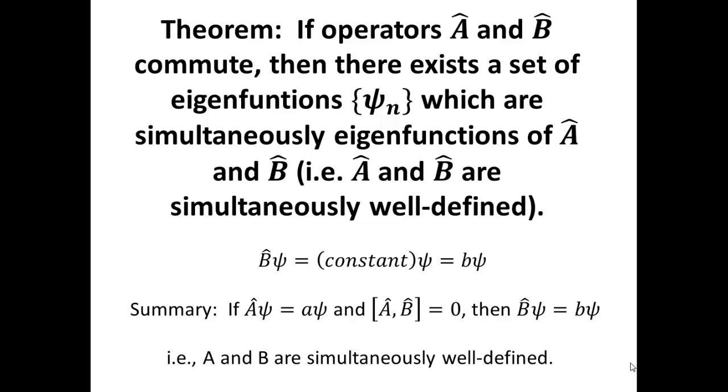And the reason why this is significant is that what this means is that both the properties A and B that we represented with the operators A and B are simultaneously well-defined, meaning we can know the values at the same time and we can know them infinitely precisely. We're not bound by any kind of Heisenberg uncertainty principle limit.